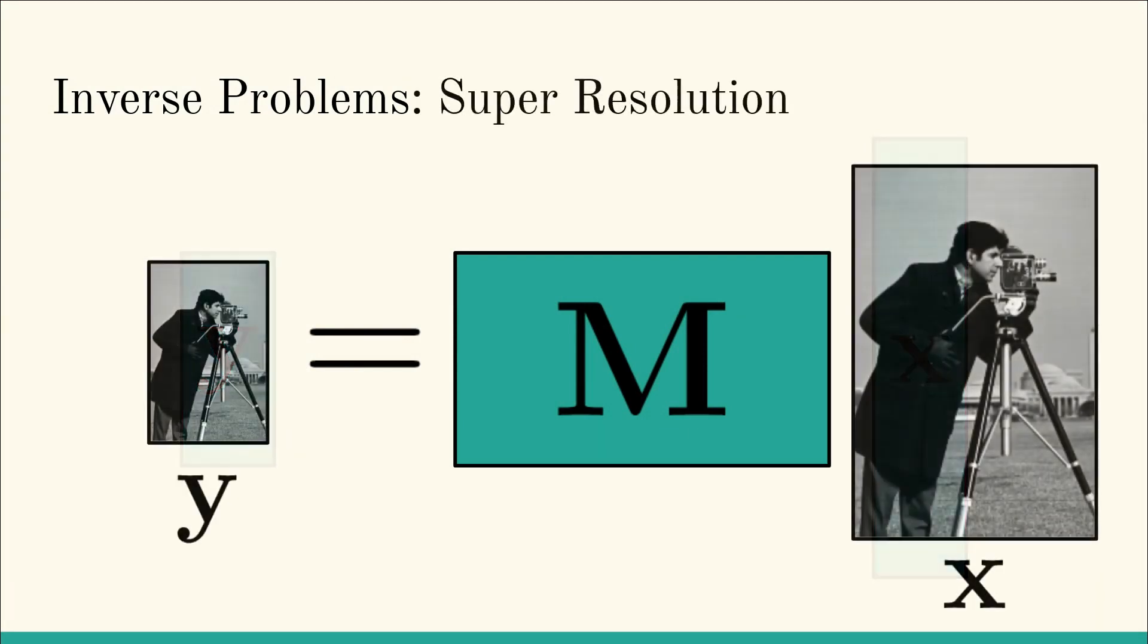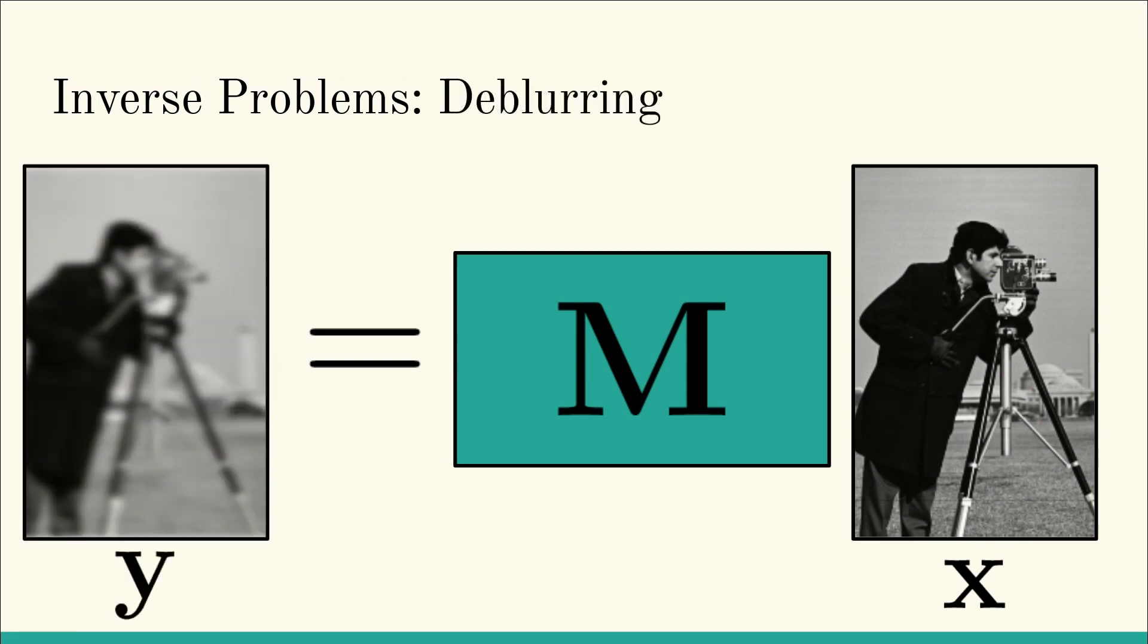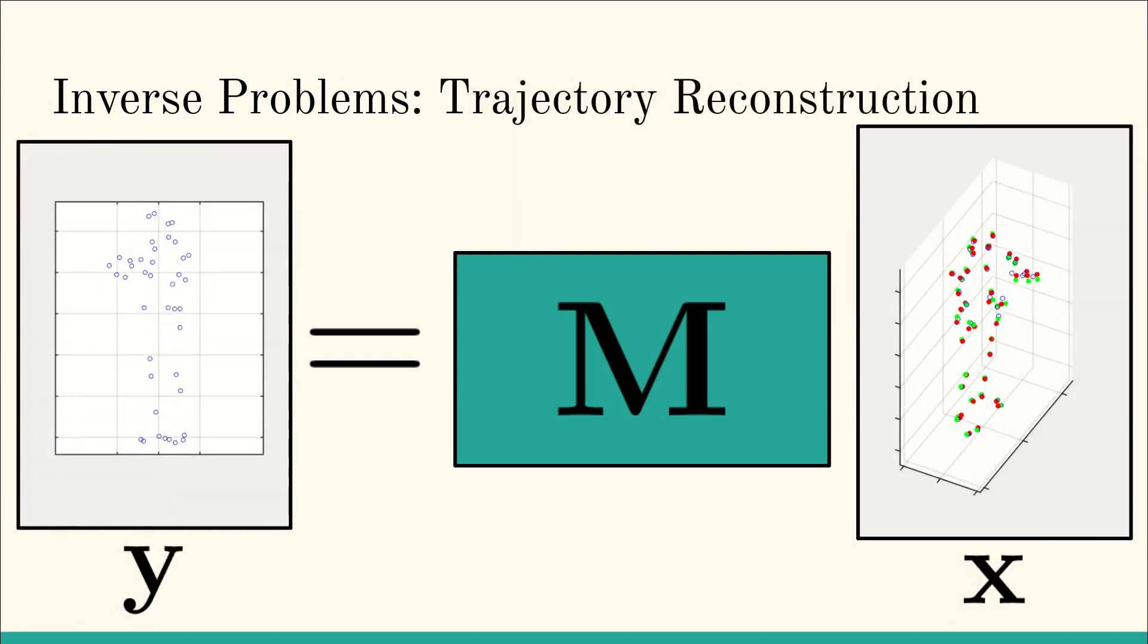In computer vision, we encounter inverse problems in tasks such as super-resolution, deblurring, and trajectory reconstruction.